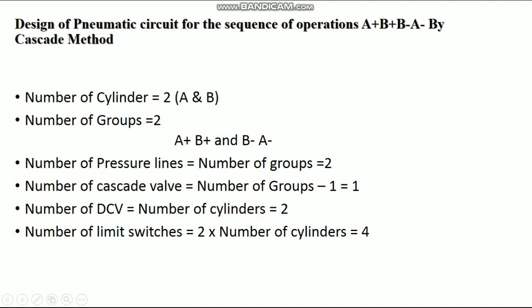For making this circuit, we need two cylinders. We have to decide the components first. The number of cylinders required is 2, named A and B. The number of groups is 2. In every group, the number of operations available should not exceed the number of cylinders. We should not change the sequence of operations, and the same cylinder operation should not repeat within the same group. By these conditions, we divide the groups as: Group 1 — A+, B+; Group 2 — B-, A-. So the number of groups is 2.